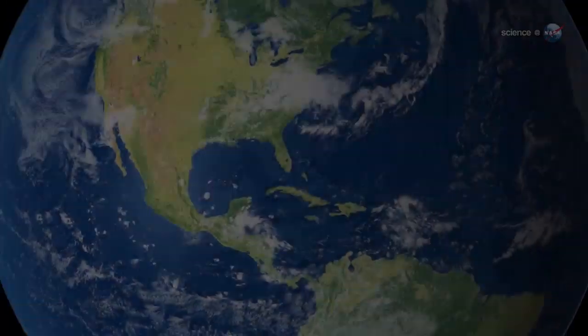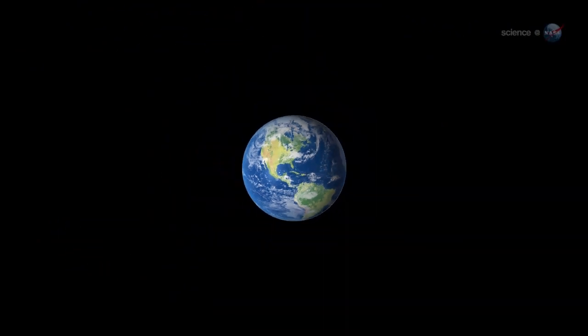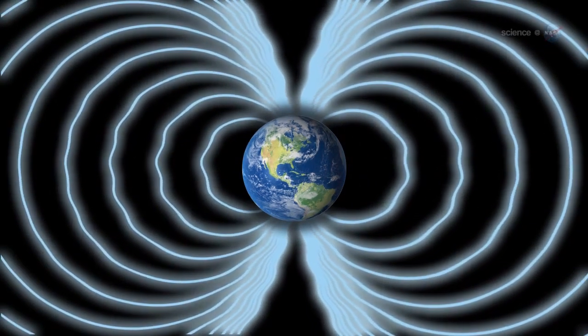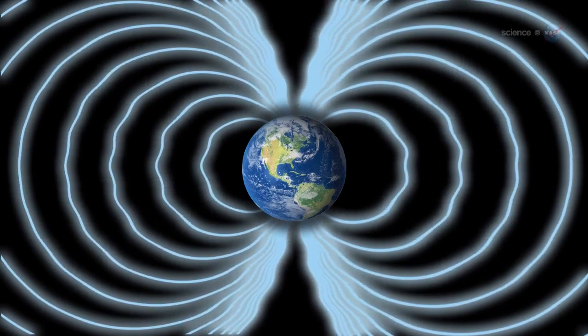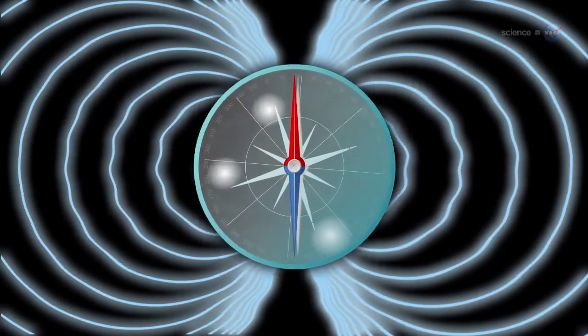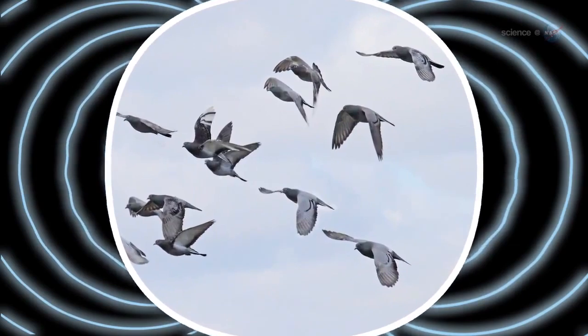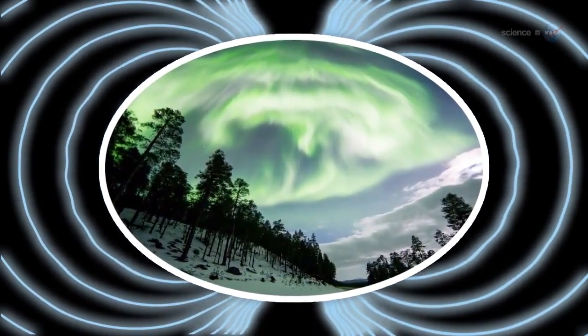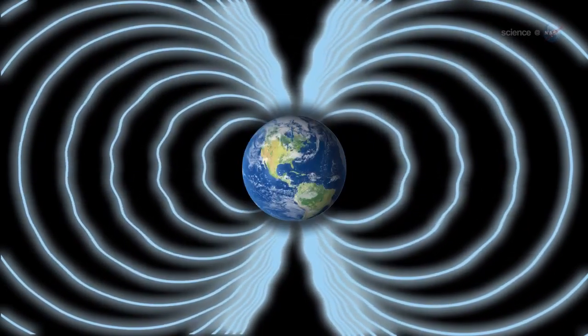Every person on Earth lives inside a magnetic field. Springing from the core of our planet, lines of magnetic force wrap around the globe, deflecting compass needles, guiding pigeons, protecting us from cosmic rays and solar storms.